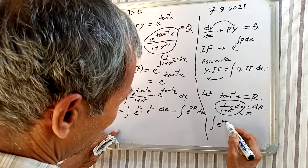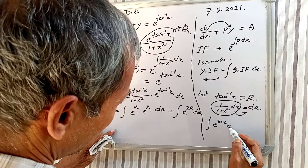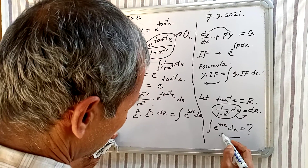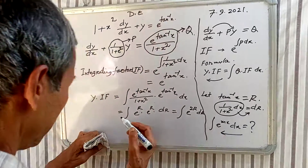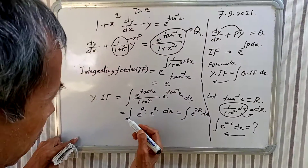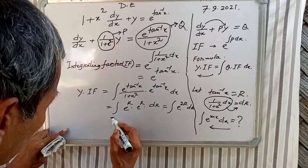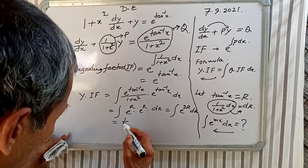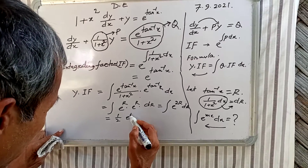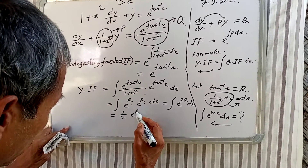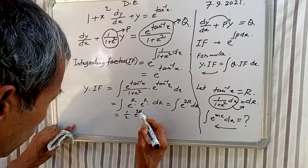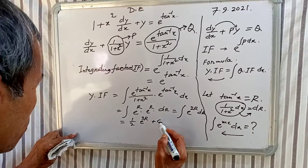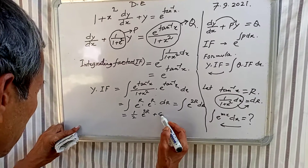Applying the formula: integration of e^(mx) dx = e^(mx)/m. This gives us (1/2) e^(2r) + C, where C is the constant of integration.